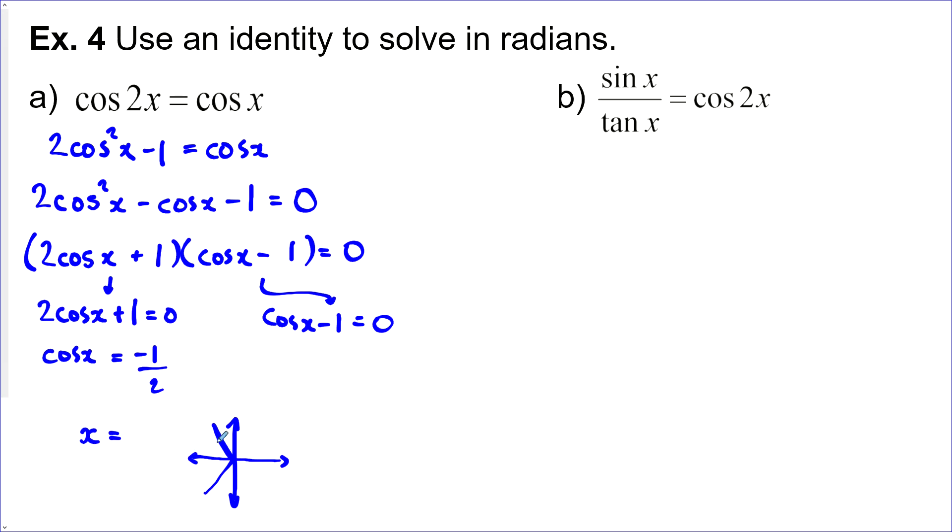So that would be those two. So this one would be 2 pi over 3 and this one here would be 4 5 pi over 3. Now there's a lot more solutions there but we'll just leave it at that for now.